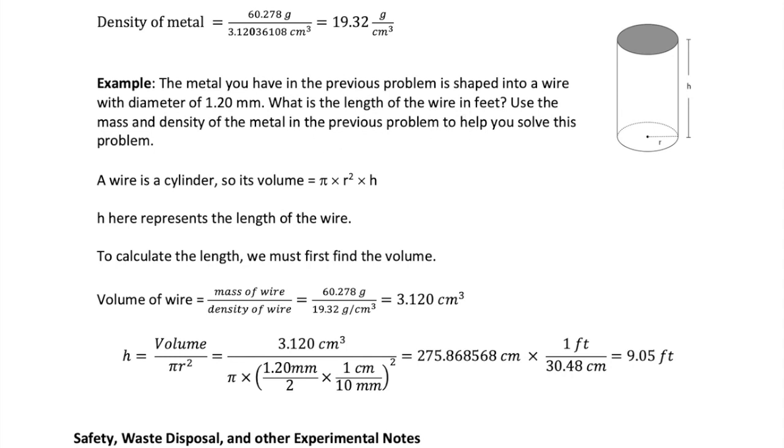To answer this question, first understand that a wire is shaped like a cylinder, and the length of the wire corresponds to the height, or h, of the cylinder. To solve for h, we must first know the volume of the cylinder, which remember is equal to pi r squared h, where r is the radius of the circular base of the cylinder. If we know the volume, we can use it to find h.